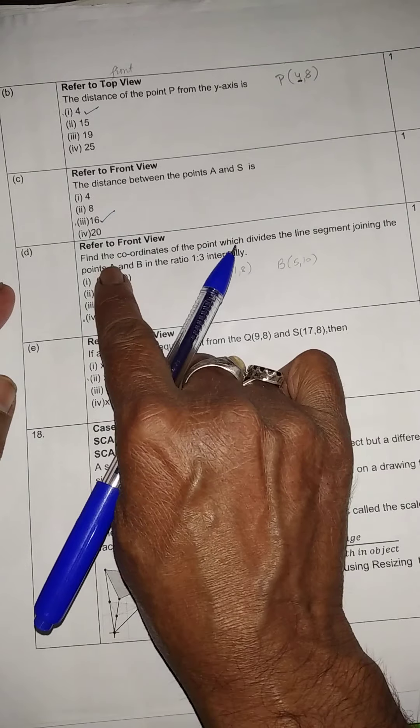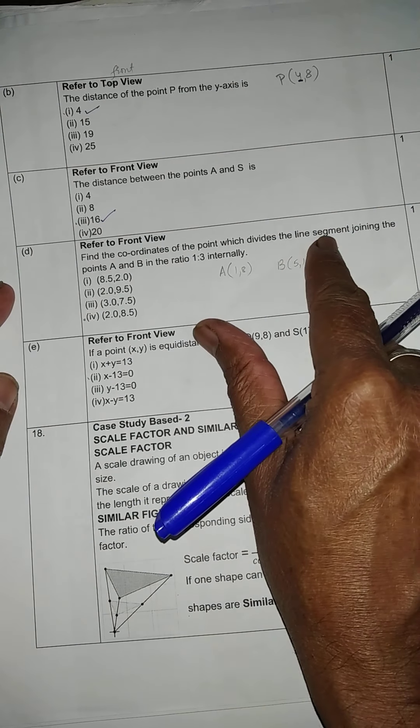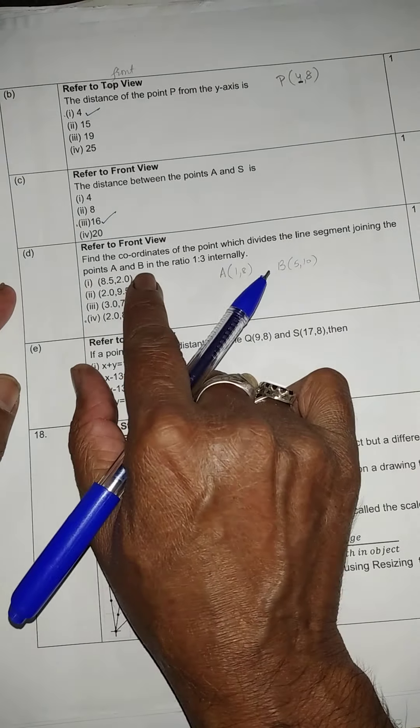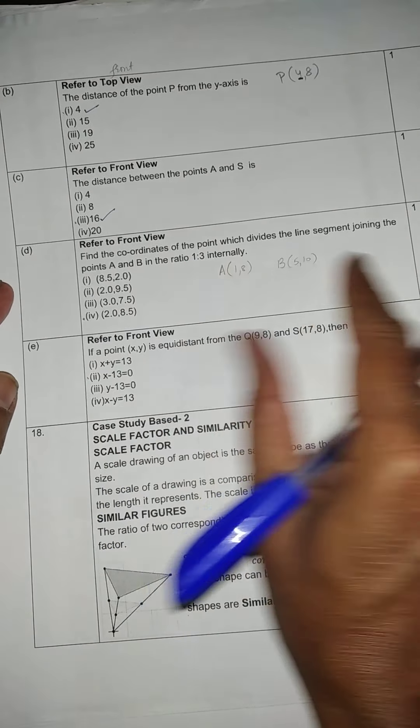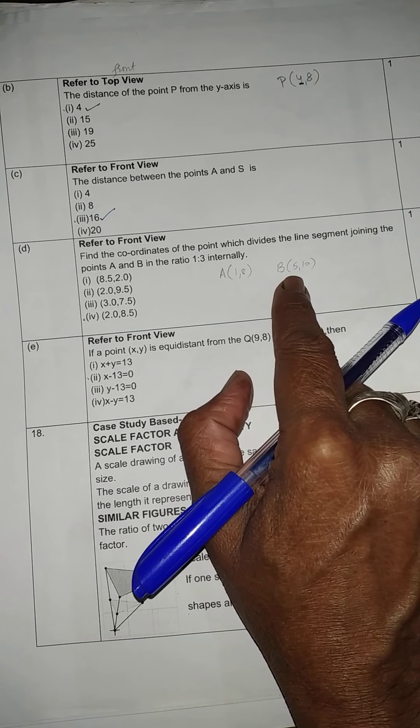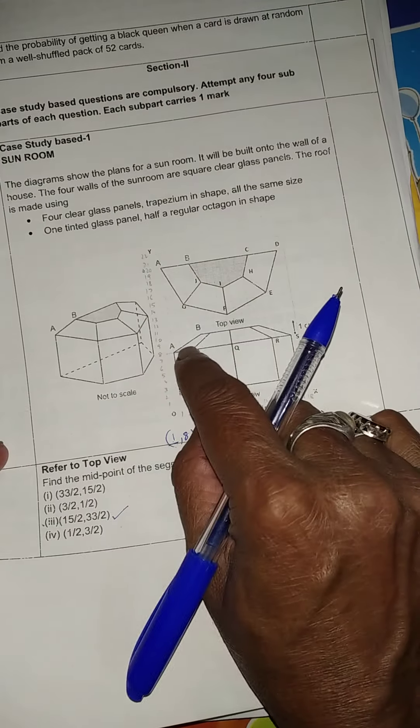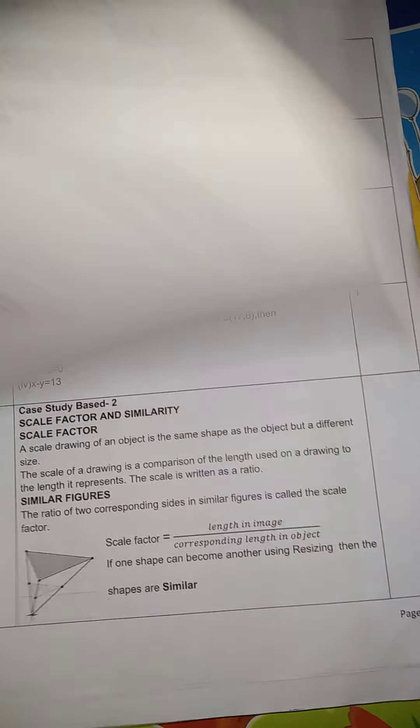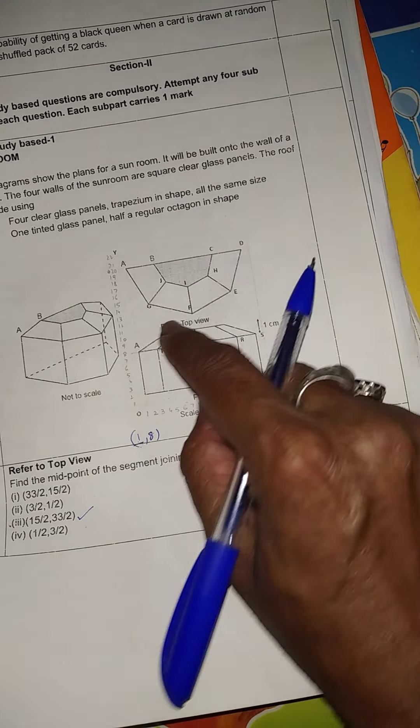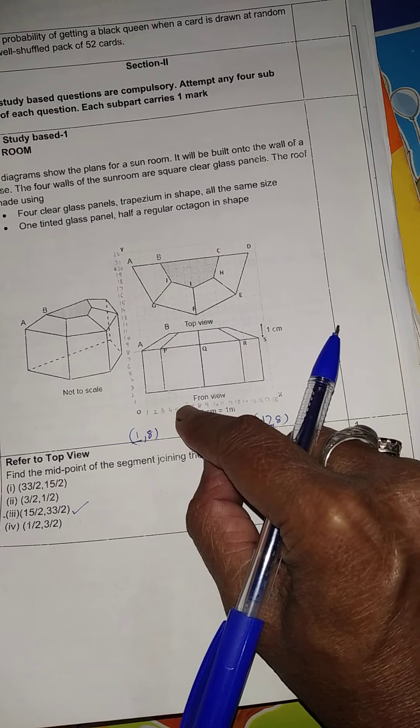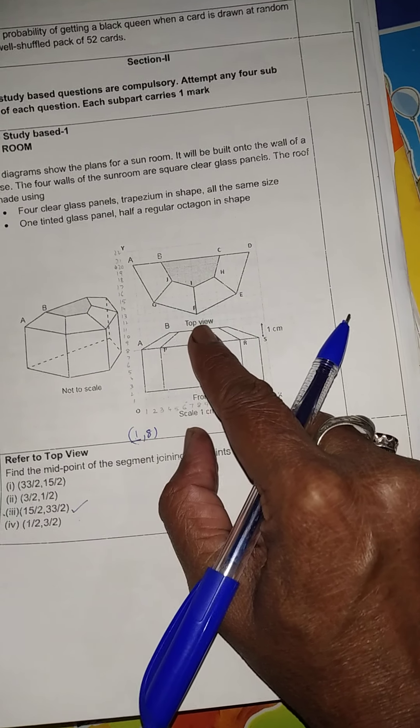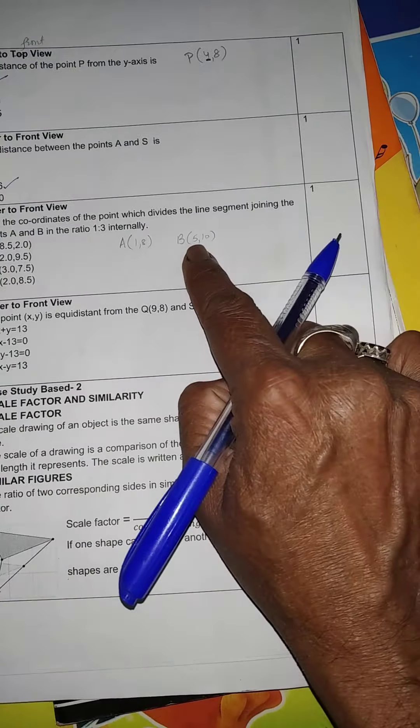Next question we have find the coordinates of the point which divides the line segment joining the points A and B in the ratio 1 is to 3 internally. Coordinates of A and B already I have written. You can see from the graph also which they have given in the question. Here section formula will be applied.